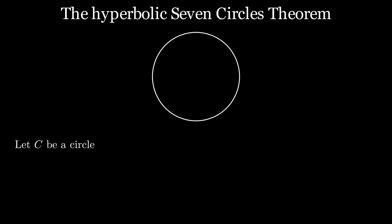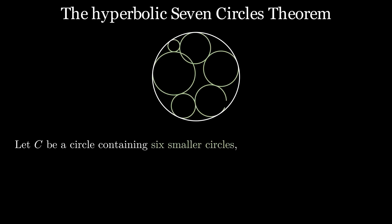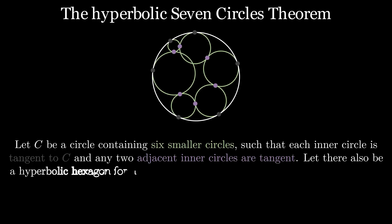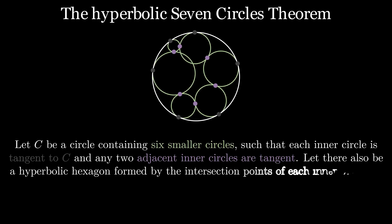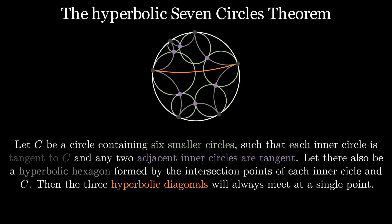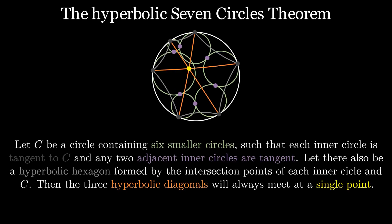Let C be a circle containing six smaller circles, such that each inner circle is tangent to the outer circle, and any two adjacent inner circles are also tangent to each other. Drawing the hyperbolic hexagon formed by the intersection points of each inner circle with the outer circle, the three main diagonals will always meet at a single point. After having proven this new statement, we simply apply the transformation from the Poincaré to the Klein model, and have thus also proven the original theorem.